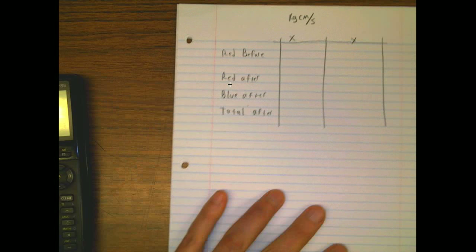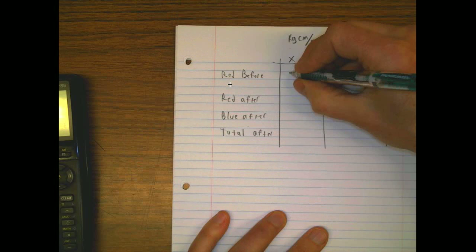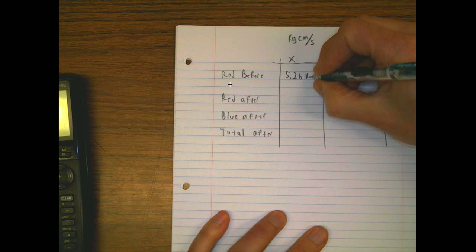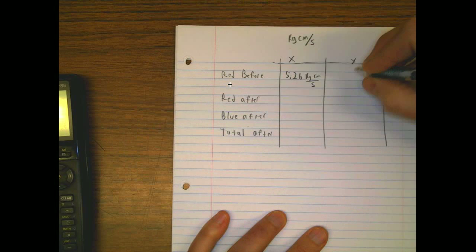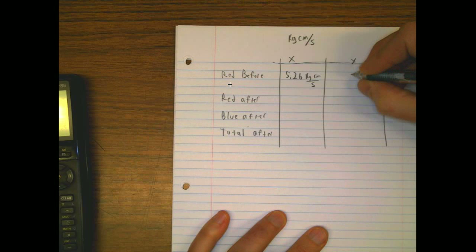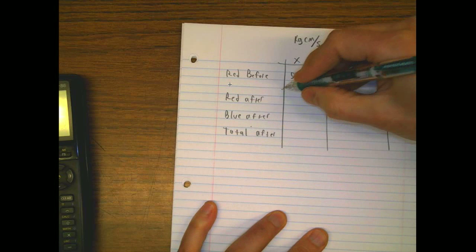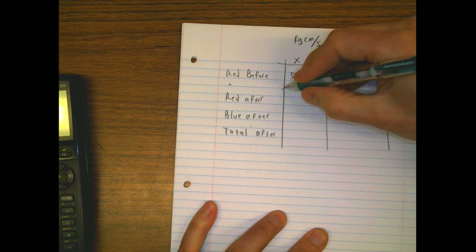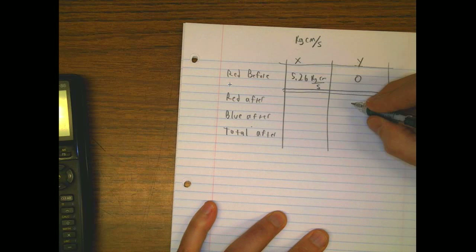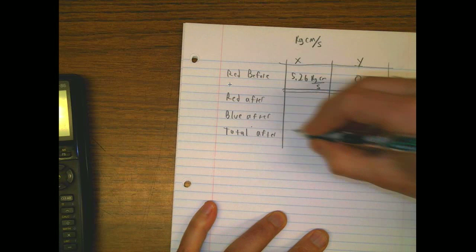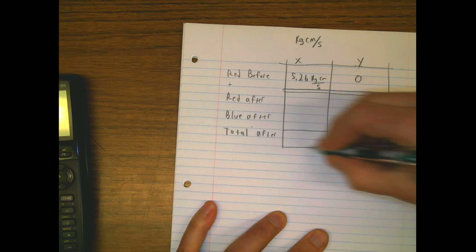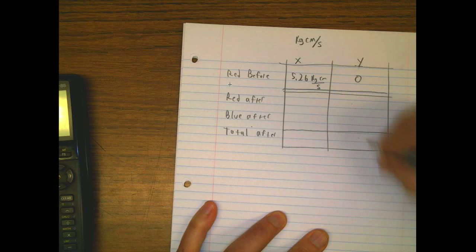I think it's 5.26, and that's kilogram centimeters per second. So let's fill that in. So before, this was 5.26 kilogram centimeters per second, and then in the y direction, it was 0. And of course, we're going to expect the red guy has a positive y. This guy will have a negative y. We think that afterwards, it's going to add probably to 0, or it's going to be something close to 0.